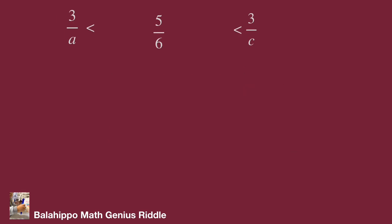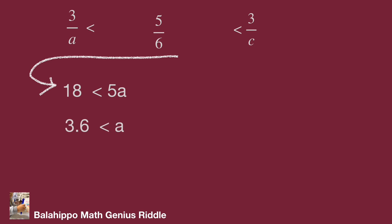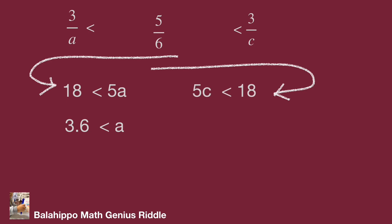That means 3 over A less than 5 over 6 less than 3 over C. From 3 over A less than 5 over 6, we get 18 less than 5A. From 5 over 6 less than 3 over C, we get 5C less than 18, so C less than 3.6. Since C is a positive integer, C could be equal to 1, 2, or 3.